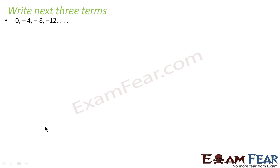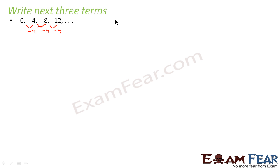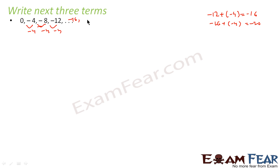Let us take another example: 0, -4, -8, -12. The difference here is -4, here also -4, and here also -4. Since the difference is constant, this is an AP. To find the next term: -12 + (-4) = -16. Then -16 + (-4) = -20. And -20 + (-4) = -24. So we have got this series.